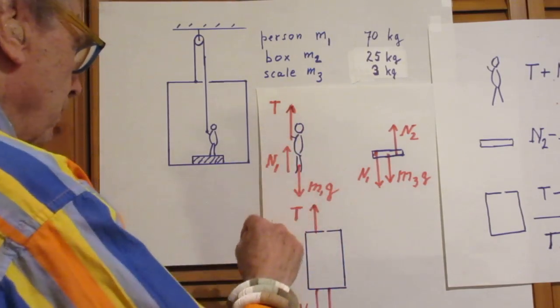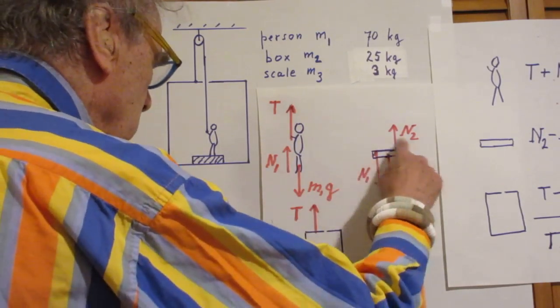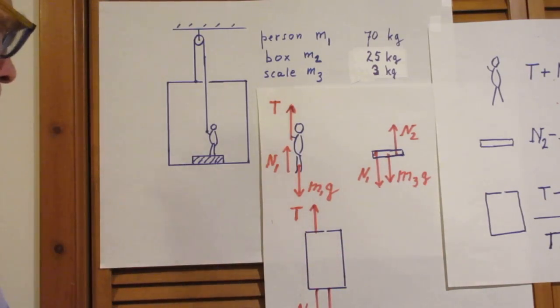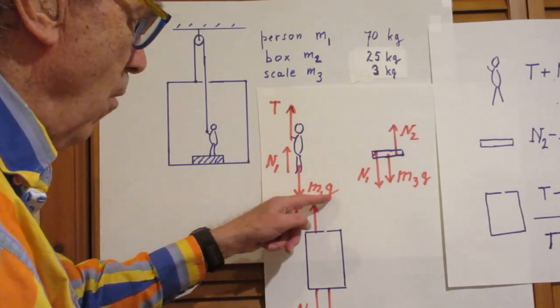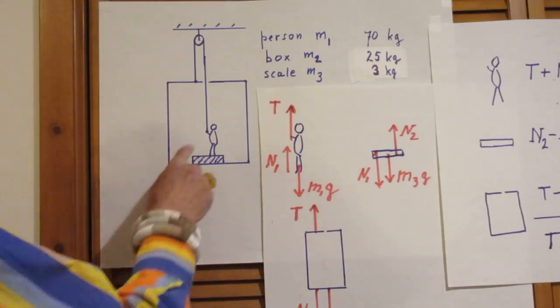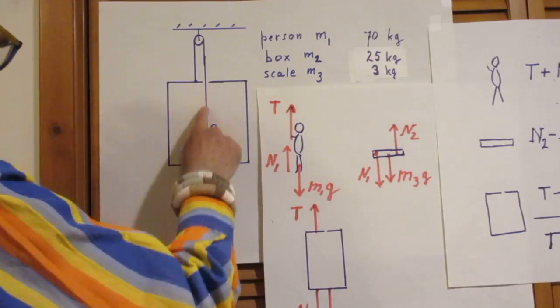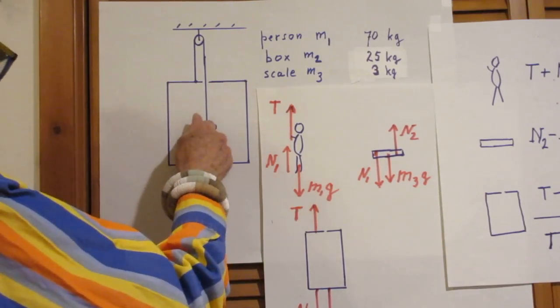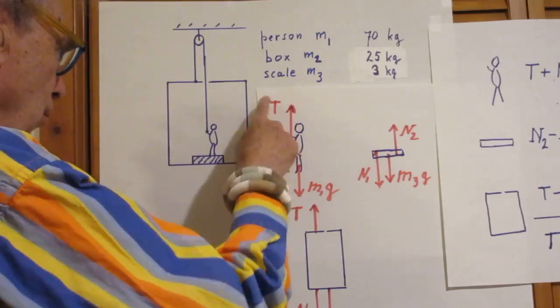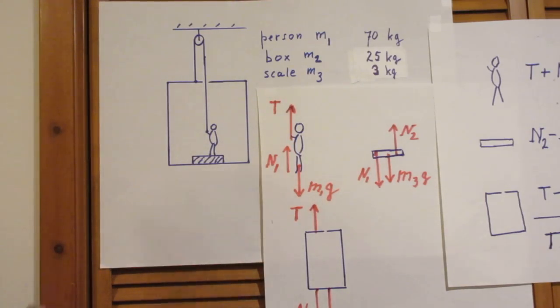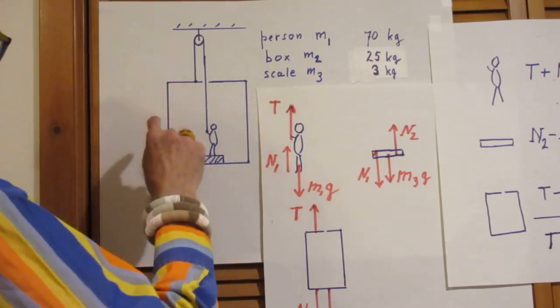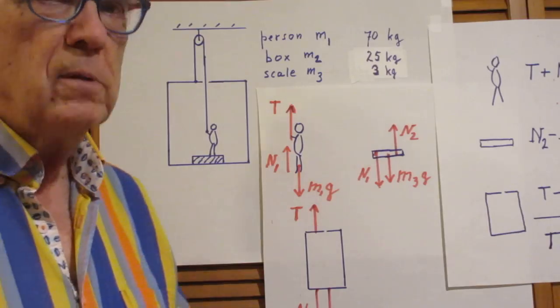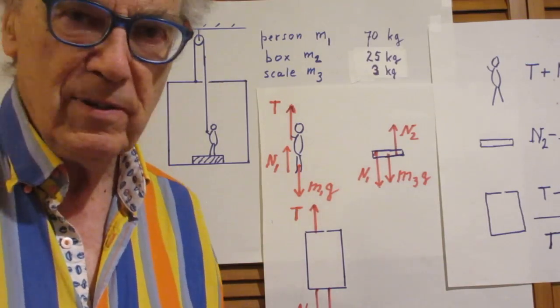Let us start with the person. The person has a mass m1, so the gravitational force down is m1g. The person holds the rope in her hand, which is pulling upwards, and the tension of the rope is T. I want you to appreciate that the tension in the rope must be everywhere the same, because we have assumed that the rope is really massless, negligible mass.